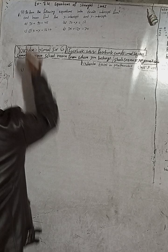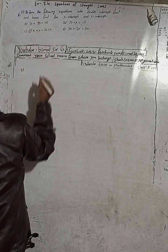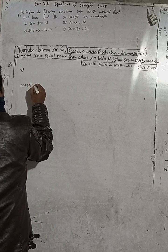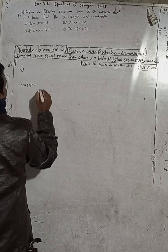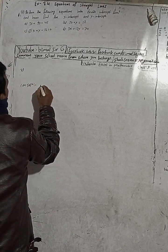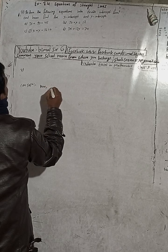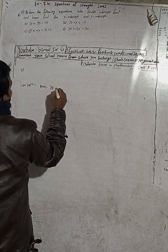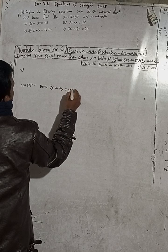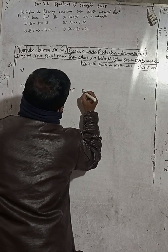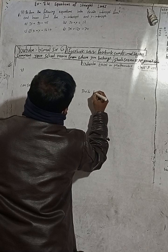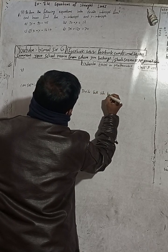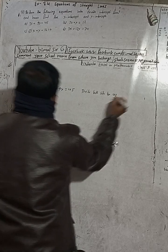Part (a): 3x plus 9y is equal to 45. So I will write here the solution. The equation is 3x + 9y = 45. Now divide both sides by 45.